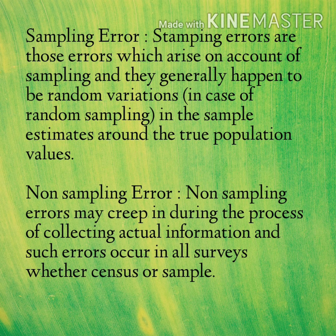The magnitude of the sampling error depends upon the nature of the universe or population. The more homogeneous the universe or population, the smaller the sampling error. Also, sampling error is inversely related to the size of the sample — it means sampling error decreases as the sample size increases and vice versa.